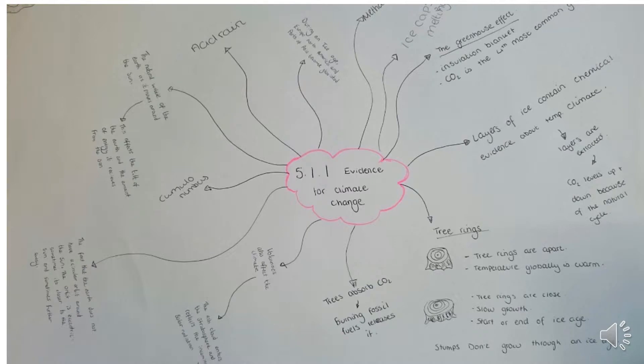Milankovitch cycles are those warmer and cooler periods which are caused by the orbit of the Earth — sometimes it's closer, and sometimes it's further away from the Sun. The tilt of the Earth also affects the amount of solar energy it receives.